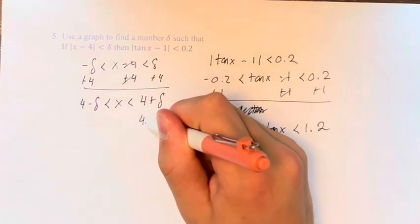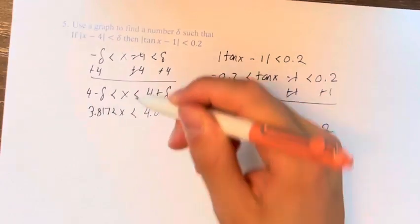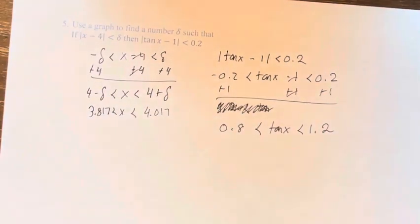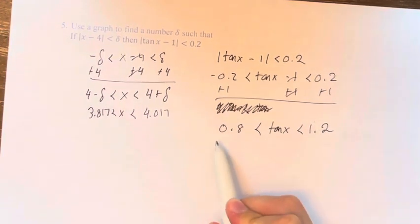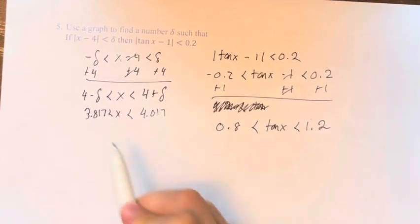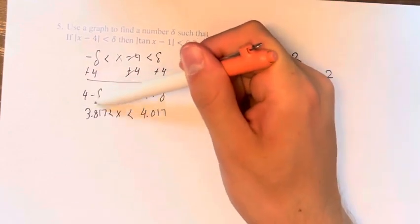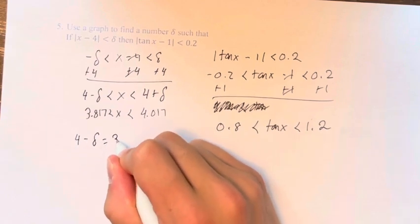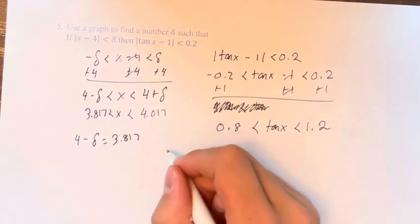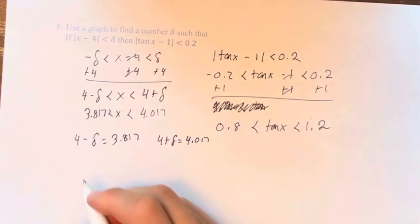So this means that if we want tangent of x to be between these two values, x has to be between these two values. And these are being represented by a distance delta away from 4. So what is delta? Well, we have this delta and this delta, and we'll see in a second why they don't match.